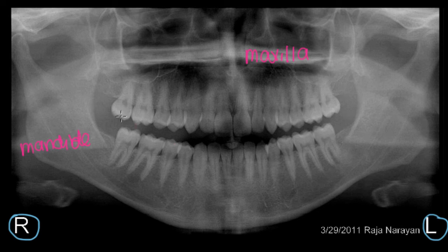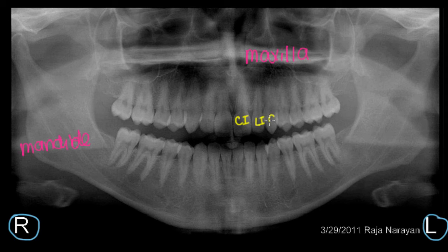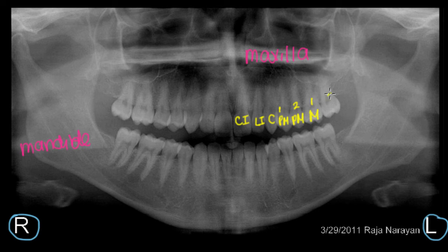The teeth in my X-ray are a little different from the image we saw previously. Counting them: here's my central incisor, this is my lateral incisor, the canine, my first premolar, my second premolar, my first molar, and my second molar. Something is missing — and it's not just on one side, but it's missing on this side, this side, and this side as well.